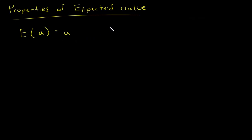So, suppose, for example, you have the expected value of the number three. This would just equal three. So there's no random variable, it's just a number there. So a represents some number on the real number line.